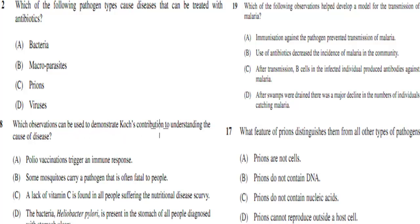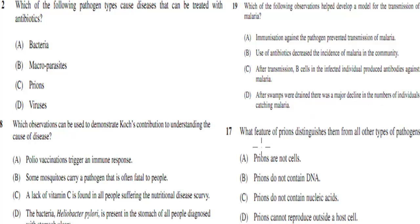Which observation can be used to demonstrate Koch's contribution to understanding the cause of disease? Options: polio vaccinations triggering an immune response; mosquitoes carrying a fatal pathogen; a lack of vitamin C in all scurvy sufferers; or Helicobacter pylori present in the stomach of all people diagnosed with stomach ulcers. Which observation helped develop a model for malaria transmission? Options include: after swamps were drained, there was a major decline in people catching malaria. And: what feature of prions distinguishes them from all other pathogens? A. Prions are not cells. B. Prions do not contain DNA. C. Prions do not contain nucleic acids. D. Prions cannot reproduce outside the cell. Pause the video and attempt the questions.